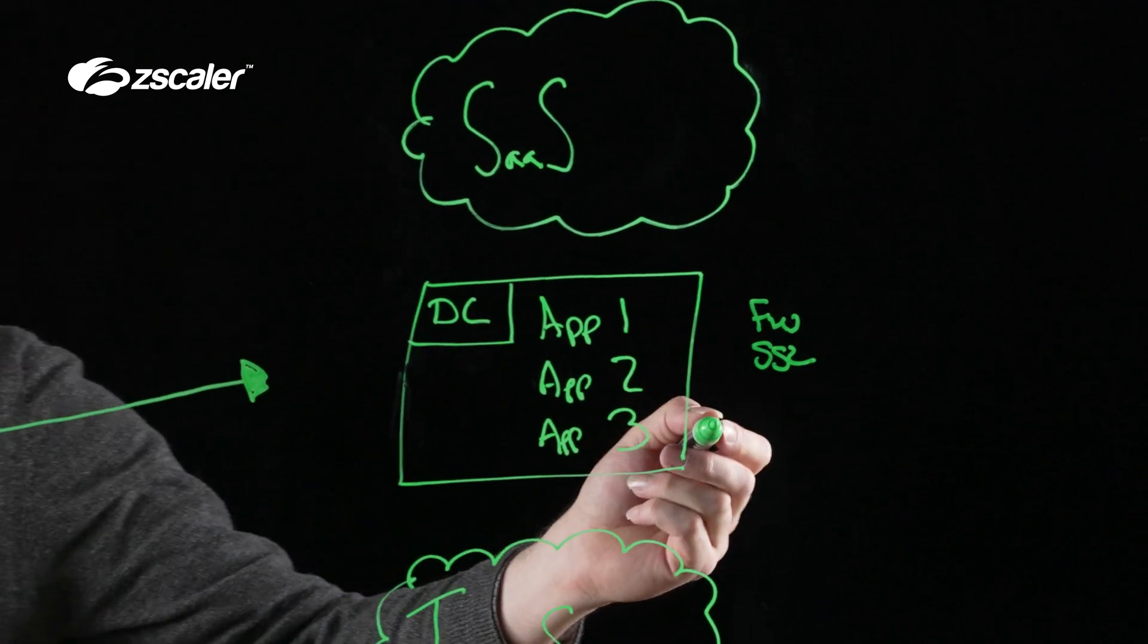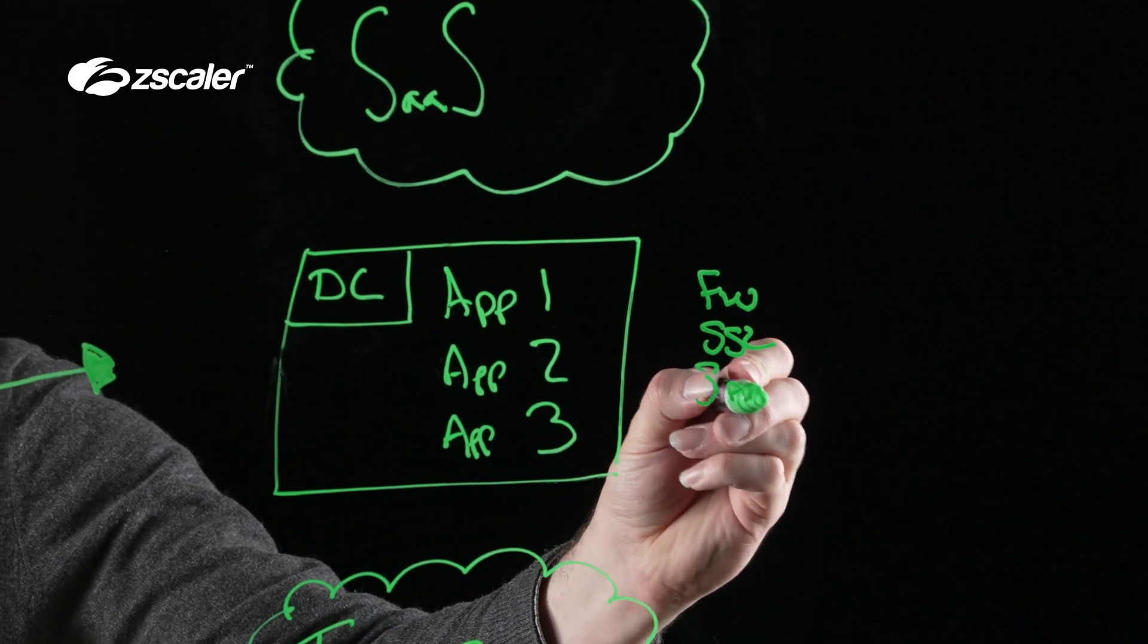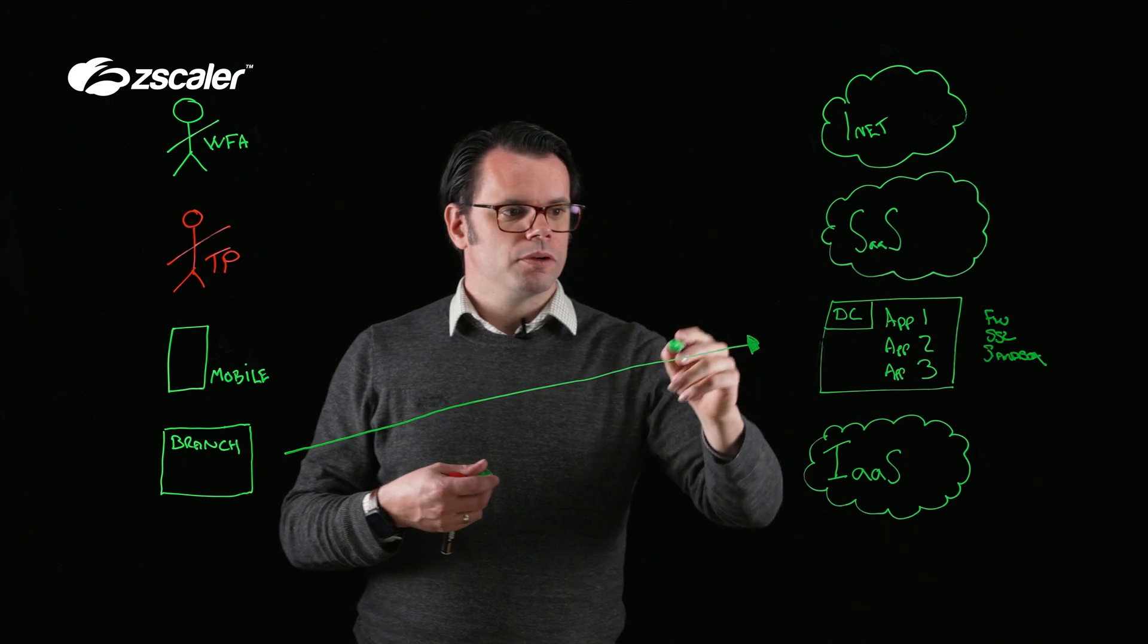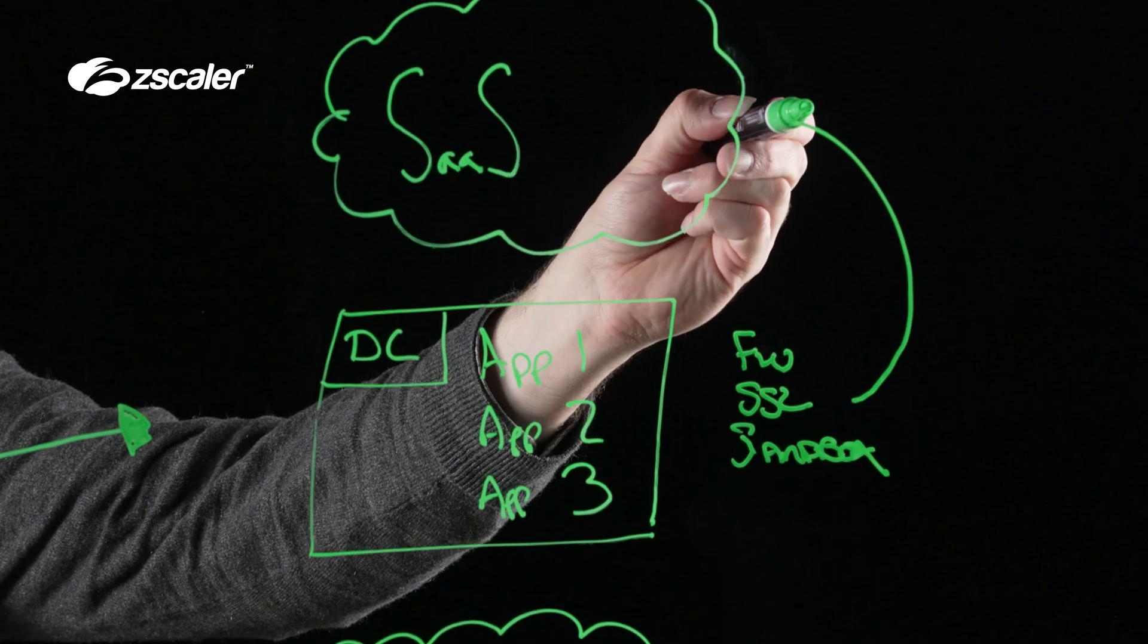We'd also have a number of controls - things like firewalls, things like potentially SSL inspection. We may well be looking at sandboxing. And we would run all of our traffic through these controls and then out over to the internet.